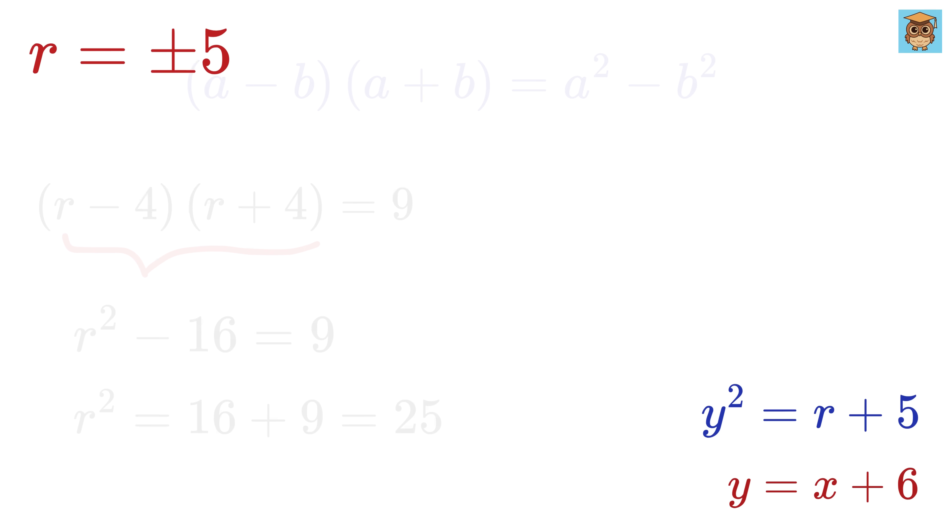So when r equals 5, we get y squared equals 5 plus 5, or 10, and thus y equals plus or minus square root of 10.